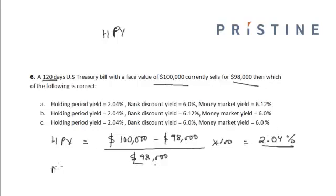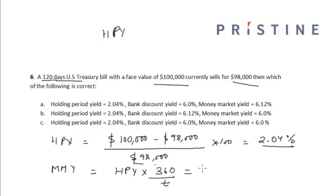The money market yield (MMY) is nothing but HPY into 360 divided by T, where T is equal to 120 days — the days till maturity of the US Treasury bill. So in this case it will be equal to 2.04% into 360 divided by 120, which is equal to 6.12%.